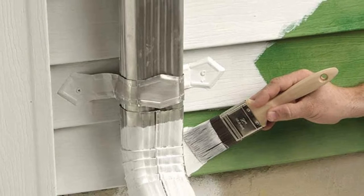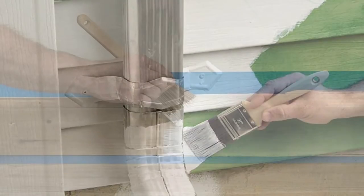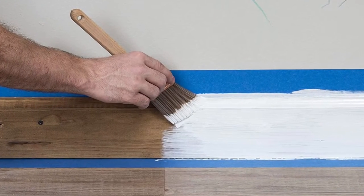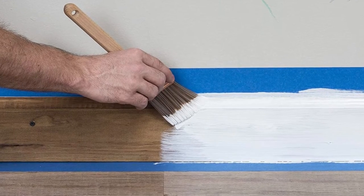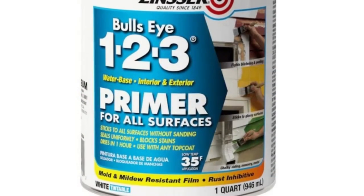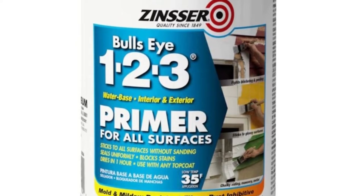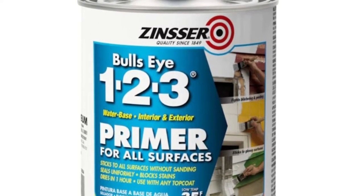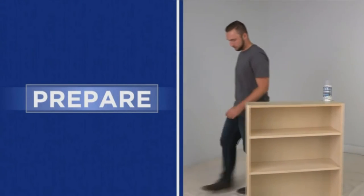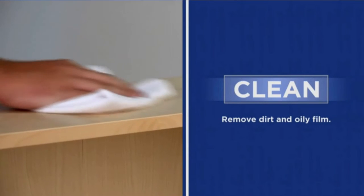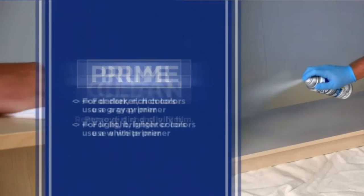This exterior latex primer also has stain-blocking properties. Whether you are dealing with water stains, smoke stains, or grease stains, the formula should have good enough coverage. Quality-wise, this primer for exterior wood is also resistant to blistering and peeling. It has an easy-to-apply formula that leaves fewer brush marks, giving it bonus points compared to the High Hide.